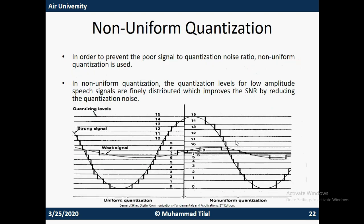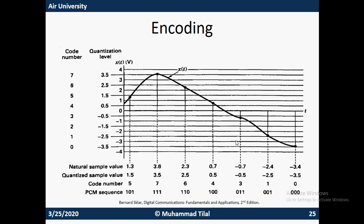Looking at this slide, let's say the last quantization level is 3.5. If my signal exceeds 3.5 and reaches something like 7.5 at any given instant, and I want to round off 7.5 to the nearest possible value, it is only possible to round it off to 3.5. So the difference between 7.5 and 3.5 is approximately 4 volts, and this error will keep increasing if the signal goes beyond 7.5.